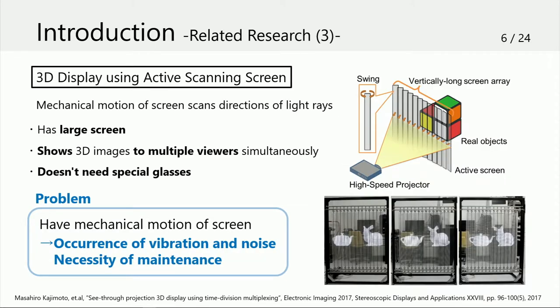Here is a 3D display using an active scanning screen. The screen reflects light from the projector to the viewer while swinging by mechanical motion. The display shows a 3D image by time division, projecting different images depending on screen direction. This display also realizes a large screen. However, there are problems such as occurrences of vibration and noise, and necessity of maintenance because it has mechanical motion.